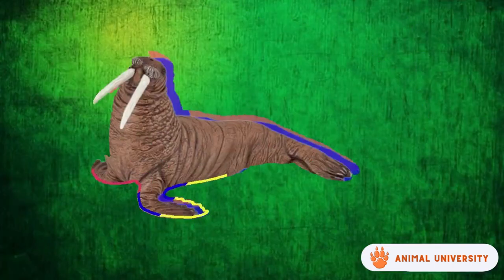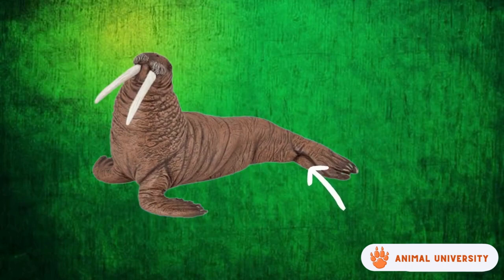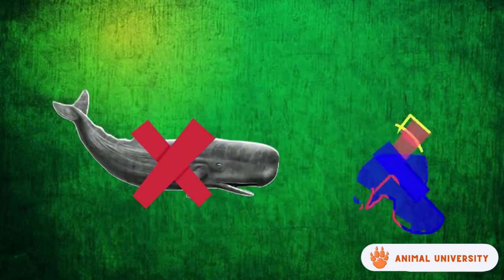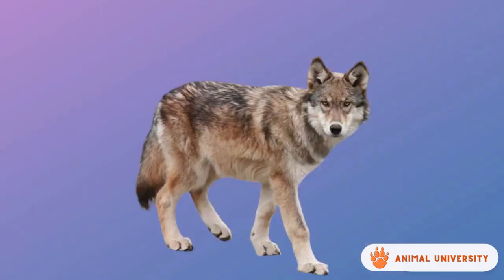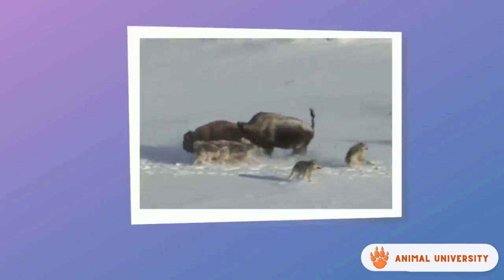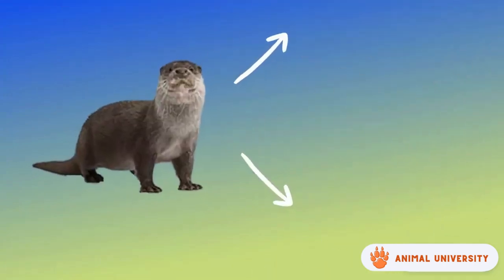In seals, the limbs have been modified into flippers for swimming, unlike in cetaceans and sirenians which have modified tails.